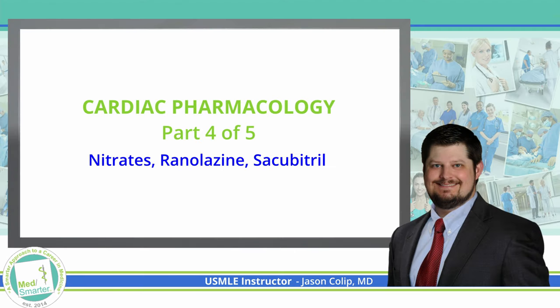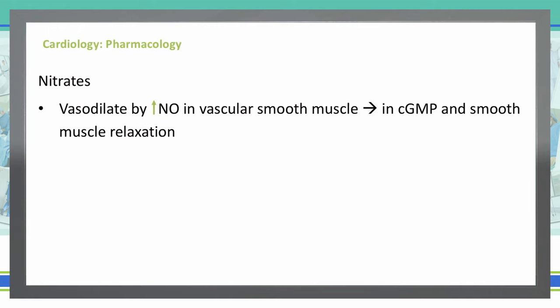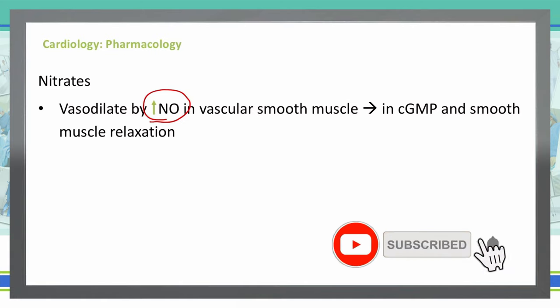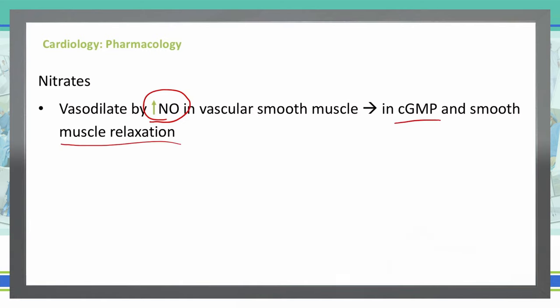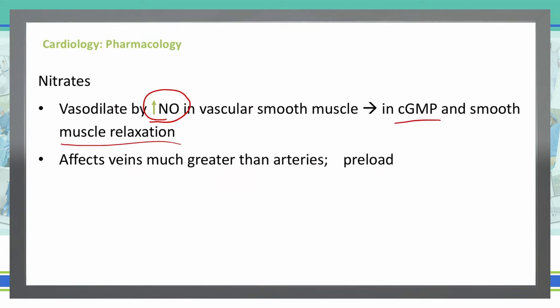Let's continue on discussing our pharmacology in association with hypertension. We'll now talk about nitrates. How do nitrates work? Nitrates work by vasodilating. They do this in the vascular smooth muscle by increasing nitric oxide. What you see here is an increase in cyclic GMP and an increase in smooth muscle relaxation.